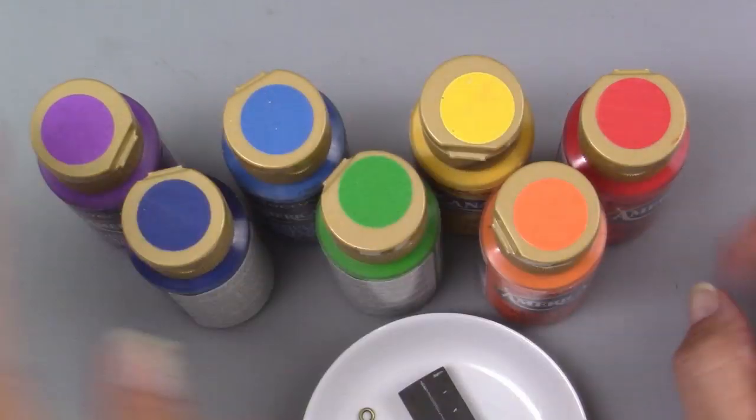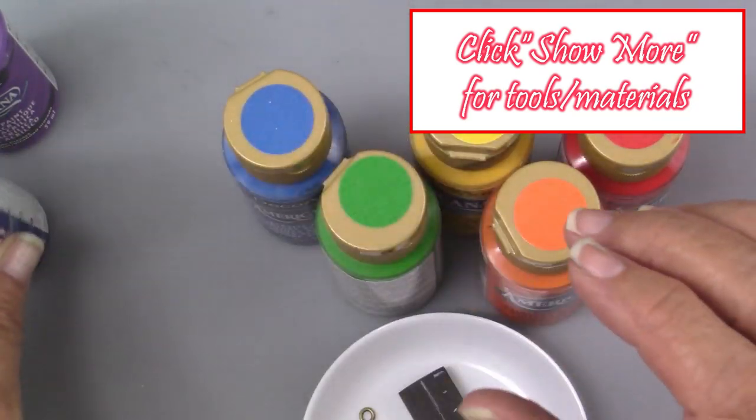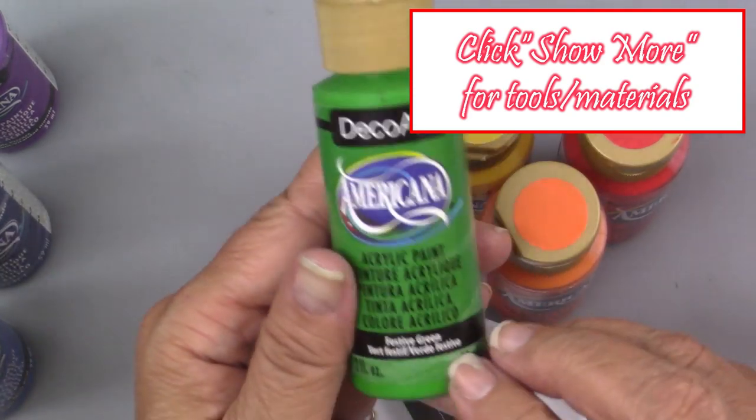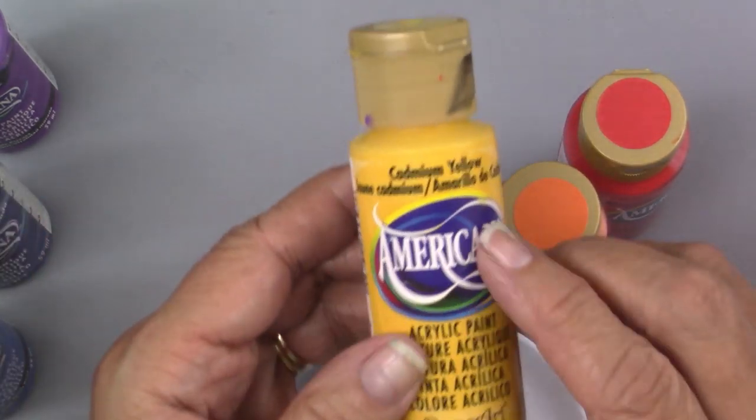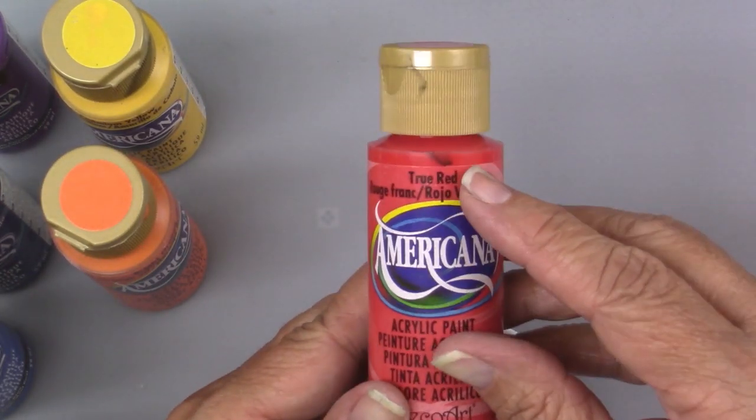I'm going to be using seven colors of paint to represent each of the chakras: Purple Pizzazz, ultra deep blue, true blue, festive green, cad yellow, bright orange, and true red.